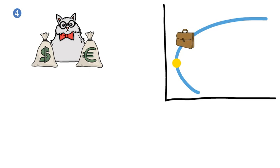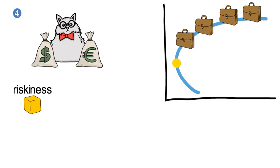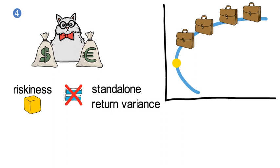And that brings me to the fourth learning point. As smart investors hold only diversified portfolios on the efficient frontier, the riskiness of a single security is not its stand-alone return variance, but its covariance with the other assets in the portfolio.